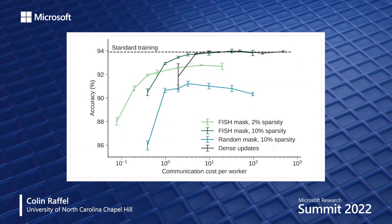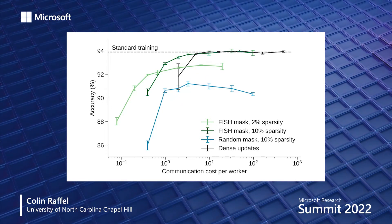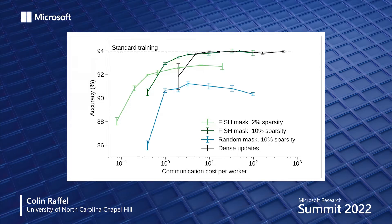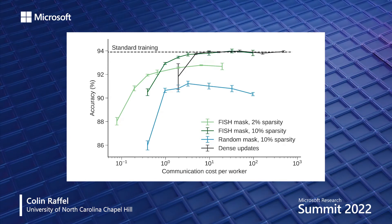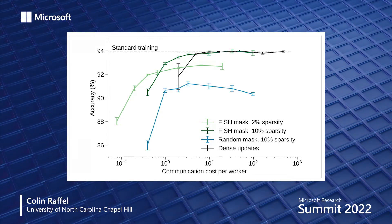We can also apply FISH Mask training to distributed training where multiple workers train a single shared model with the goal of reducing communication costs. With multiple workers training a CIFAR-10 image classification model, if we introduce the FISH Mask and reduce the percentage of parameters updated at each iteration, we get a better tradeoff between total communication and accuracy than standard dense training. For example, updating 10% of parameters achieves a better tradeoff, though at very small percentages like 2%, we can't fully recover the performance of standard training, and a random mask also fails to recover performance.